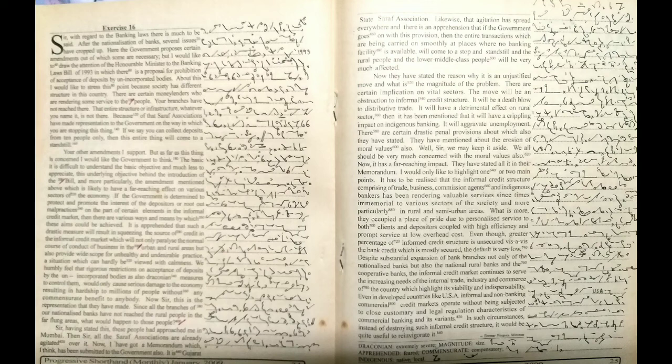If the government is determined to protect and promote the interest of the depositors or root out malpractices on the part of certain elements in the informal credit market, then there are various ways and means by which these aims could be achieved. It is apprehended that such a drastic measure will result in squeezing the source of credit in the informal credit market, which will not only paralyze the normal course of conduct of business in the urban and rural areas but also provide wide scope for unhealthy and undesirable practice, a situation which can hardly be viewed with calmness.